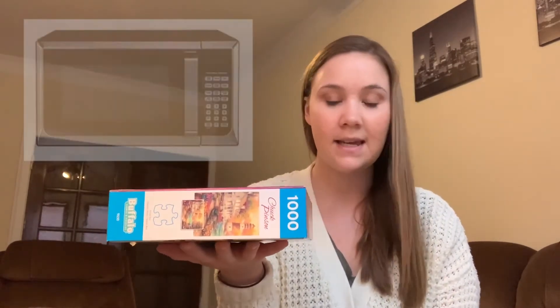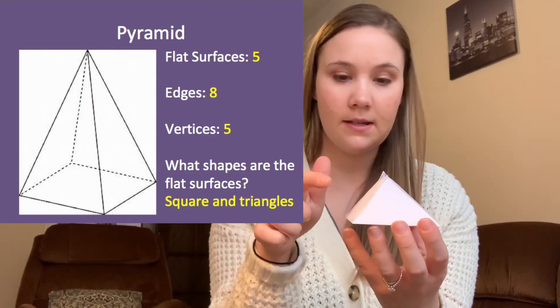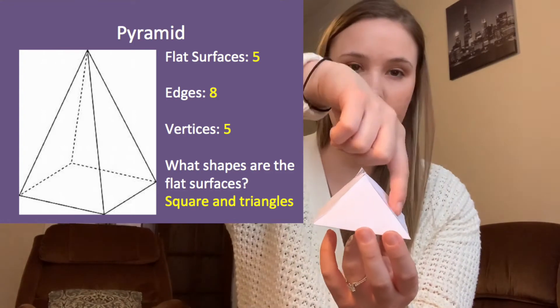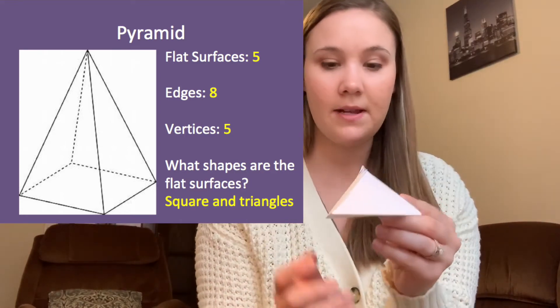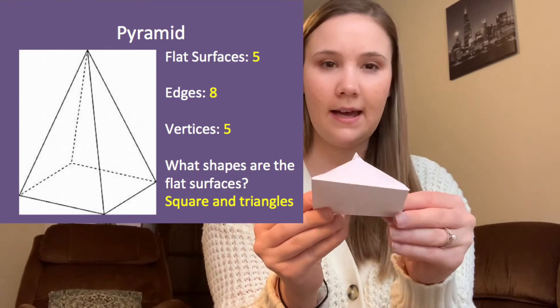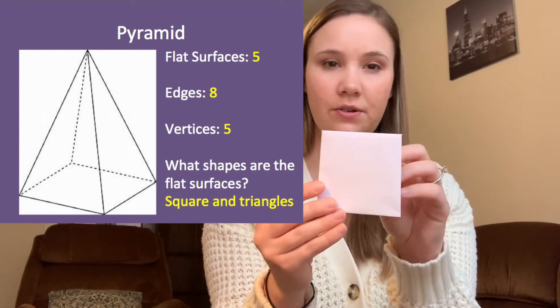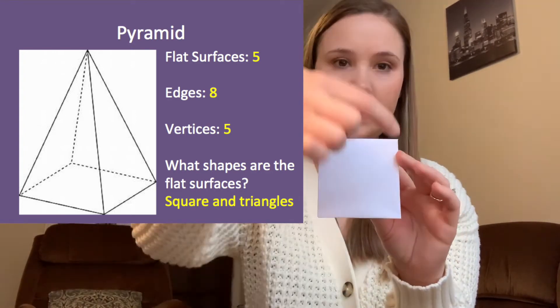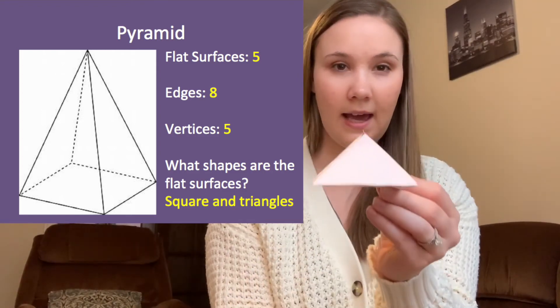Real-life examples of rectangular prisms include a fish tank, a shoe box, and a microwave. Here is a pyramid I made out of paper. Let's count the flat surfaces — going around: one, two, three, four, and then the bottom makes five flat surfaces. Now the edges — counting around the bottom square and up to the top: one, two, three, four, five, six, seven, eight — so there are eight edges.